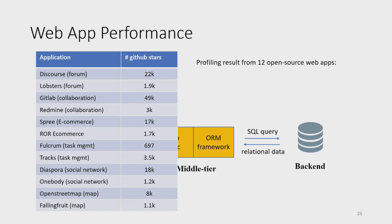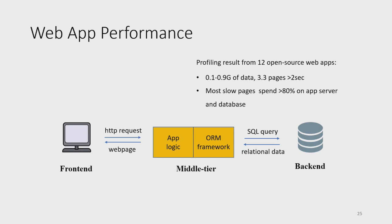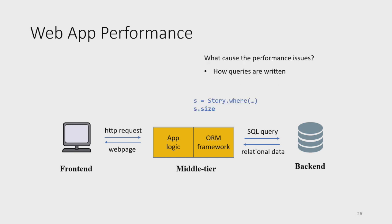We profiled 12 open-source applications to see how well they perform — popular apps with many GitHub stars, some well-known like GitLab and OpenStreetMap. Even with a small amount of data, less than one gigabyte, over three pages take more than two seconds to load. For these slow pages, they spend over 80% of time on the application server, especially the ORM framework and the back-end database. There are two major causes of slowness.